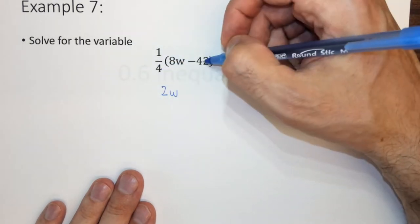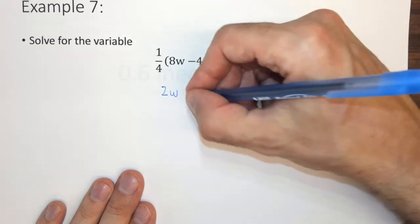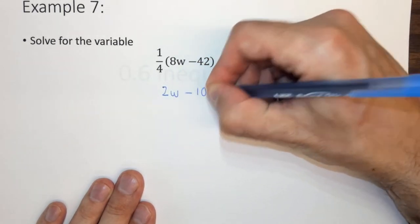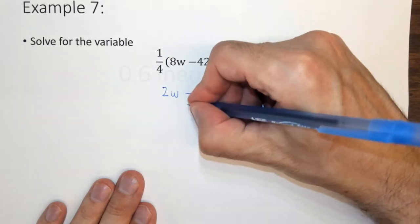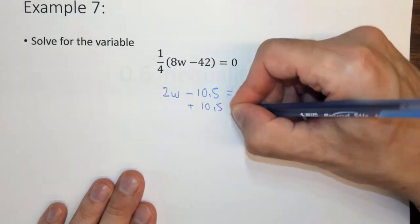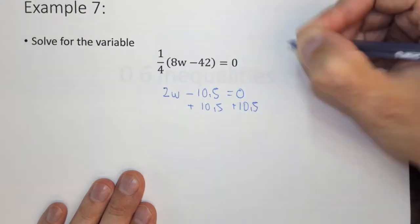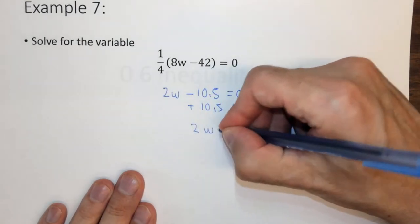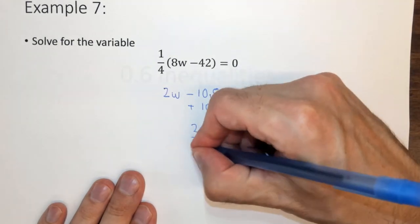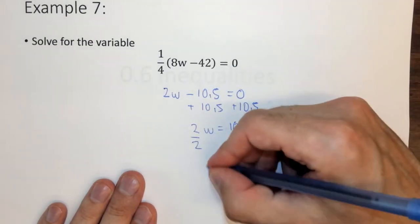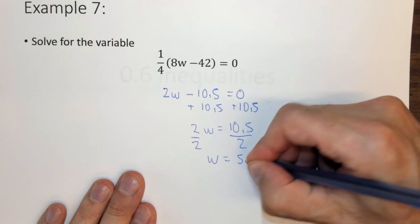So 1 fourth times negative 42 is negative 10.5. And now that equals 0. Now we can add 10.5 to both sides, add 10.5. 2w equals 10.5, divide by 2, divide by 2. W equals 5.25.